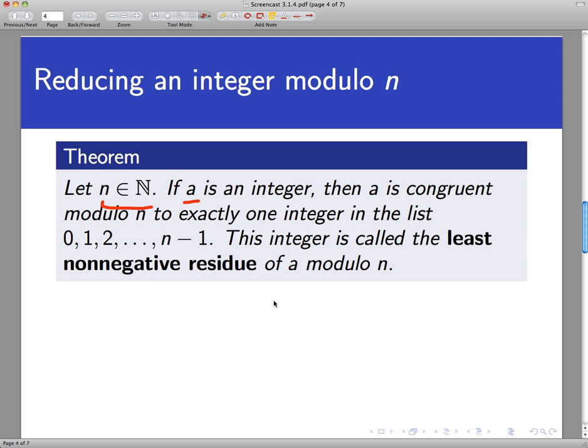And we're going to say that if I take a and find its least non-negative residue, that smallest non-negative integer that it's congruent to mod n, we're going to say we are reducing that integer mod n.